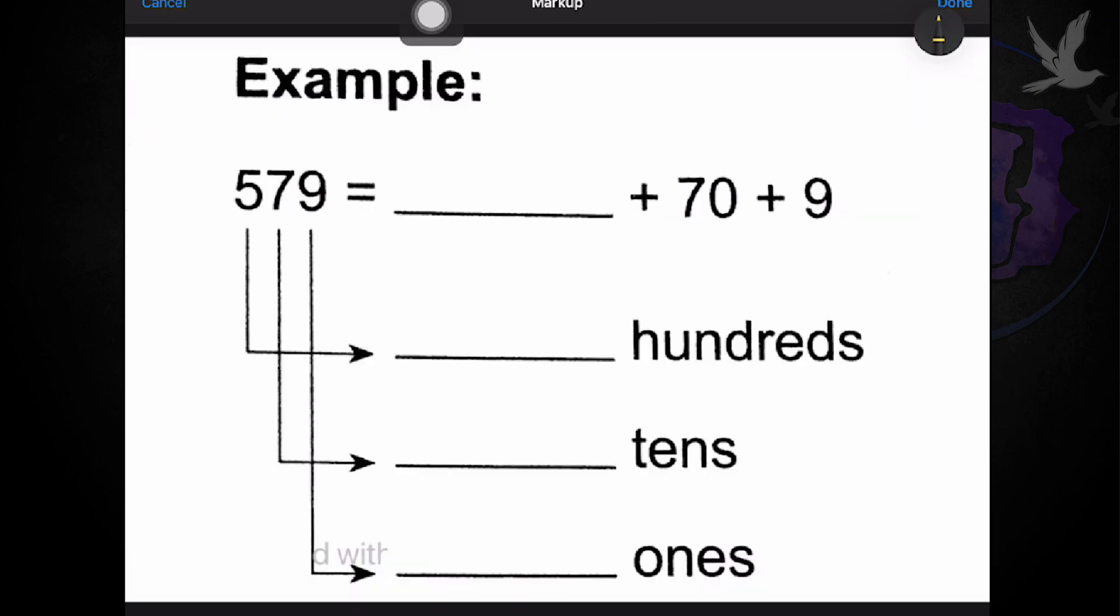So, for this activity, all you have to do is just to fill up the value of each digit by simply breaking them down. And according to their place value over here, we have hundreds, tens, and ones.